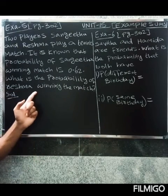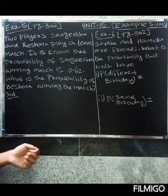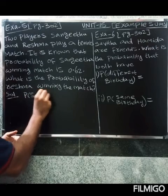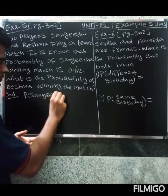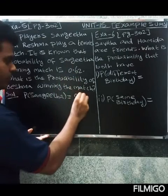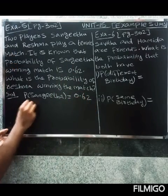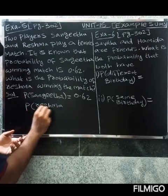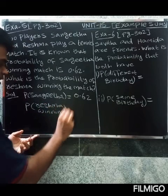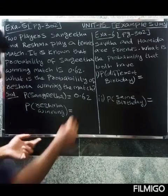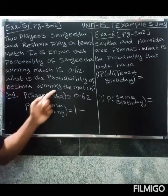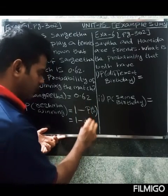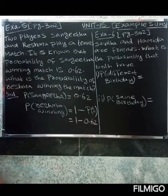The probability of Sangeetha winning the match is 0.62. So the probability of Reshma winning is one minus 0.62.